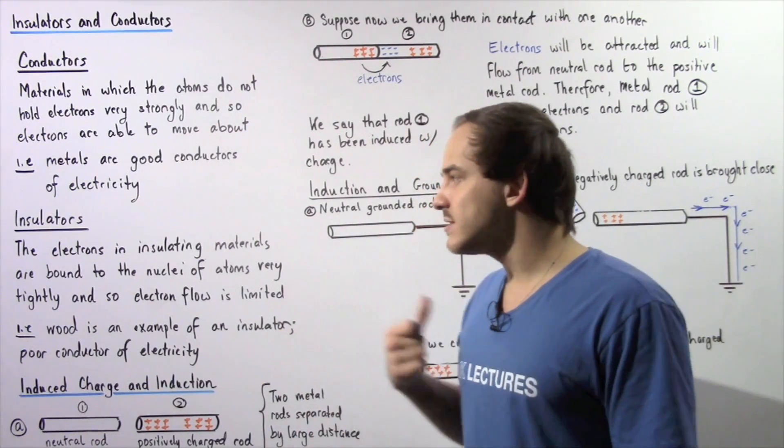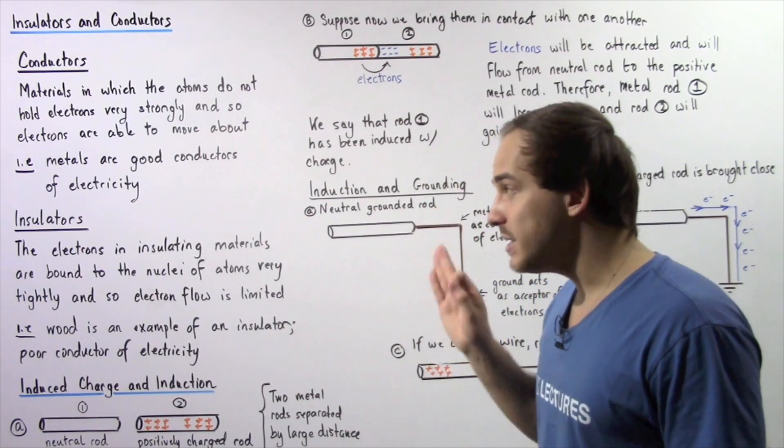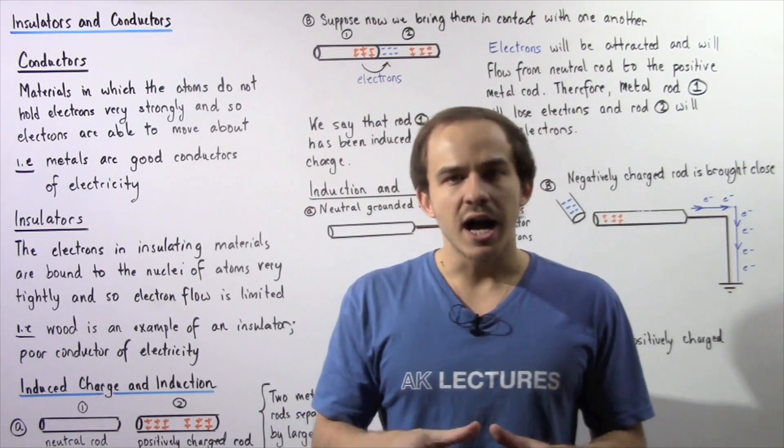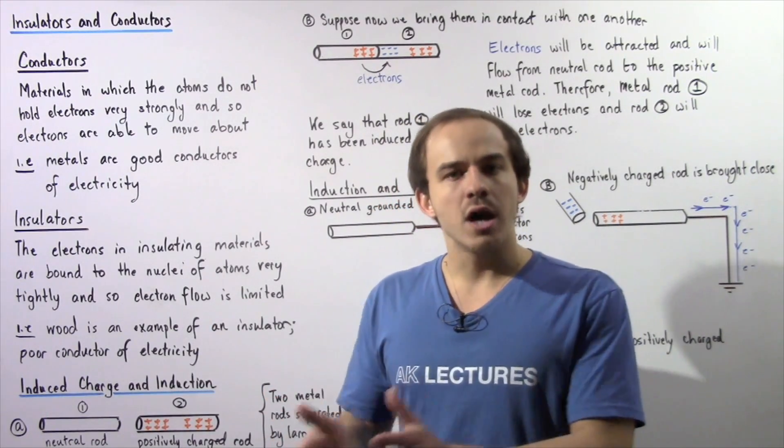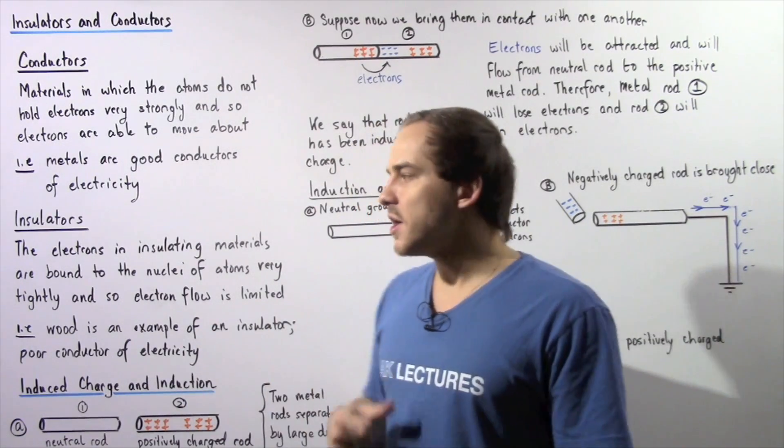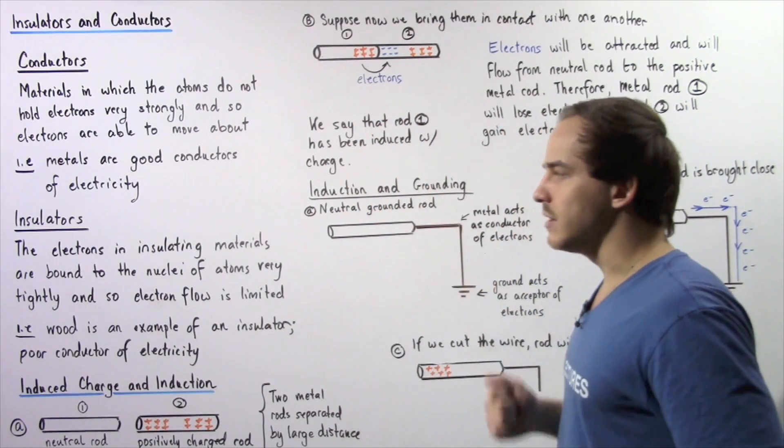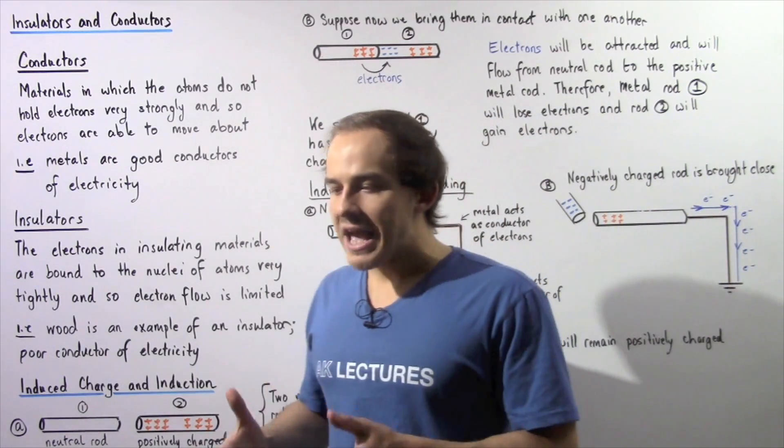One example of an insulator is wood. Wood is an example of an insulator because the nuclei of the atoms inside wood hold the electrons very tightly, and so that means electrons won't flow very easily within insulating materials.